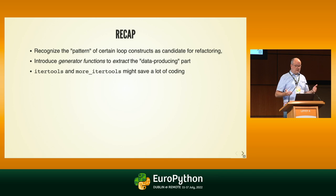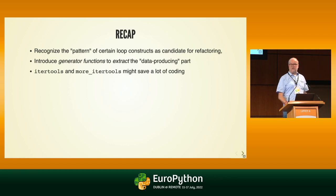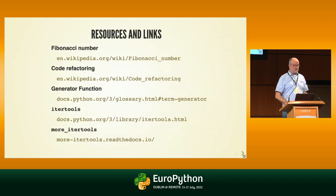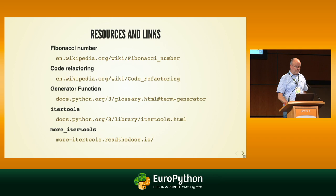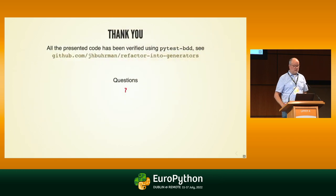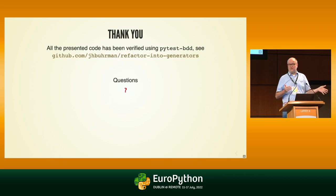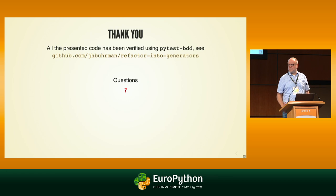To summarize: you are now able to recognize the pattern of certain loop constructs as candidates for refactoring. Generator functions let you extract the data-producing parts. And the itertools module and more-itertools package may save you a lot of coding. All the functions shown — old and new variations — have been tested using PyTest BDD. You can find out how in the GitHub repository. Thank you.